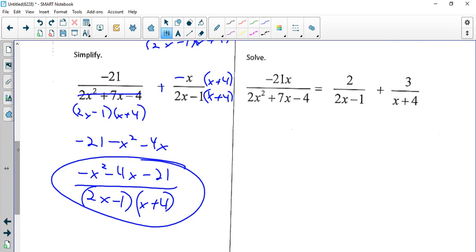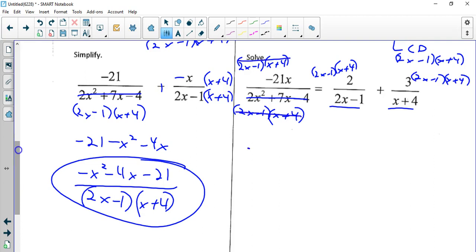Over here, we already know that this factors to 2x minus 1 times x plus 4. So we have 2x minus 1 here, x plus 4 here. For our LCD, nothing new: 2x minus 1 times x plus 4. So I'm going to multiply the top here by 2x minus 1 and x plus 4. Here it's going to be 2x minus 1 times x plus 4. And here I'm going to use 2x minus 1 times x plus 4, the entire LCD top only. Well, everything cancels here, leaving me negative 21x equals.